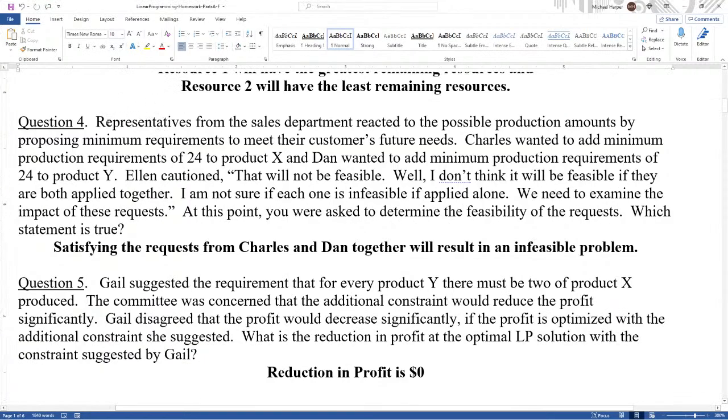Question four. Representatives from the sales department reacted to the possible production amounts by proposing minimum requirements to meet their customers' future needs. Charles wanted to add a minimum production requirement of 24 to product X. Apparently that's what Charles is selling to his clients. And Dan wanted to add a minimum production requirement of 24 to product Y. Well, Dan is probably the salesperson for product Y. Ellen cautioned, that will not be feasible. Well, I don't think it would be feasible if they are both applied together. I'm not sure if each one is infeasible if applied alone. We need to examine the impact of these requests. At this point, you were asked to determine the feasibility of the request.